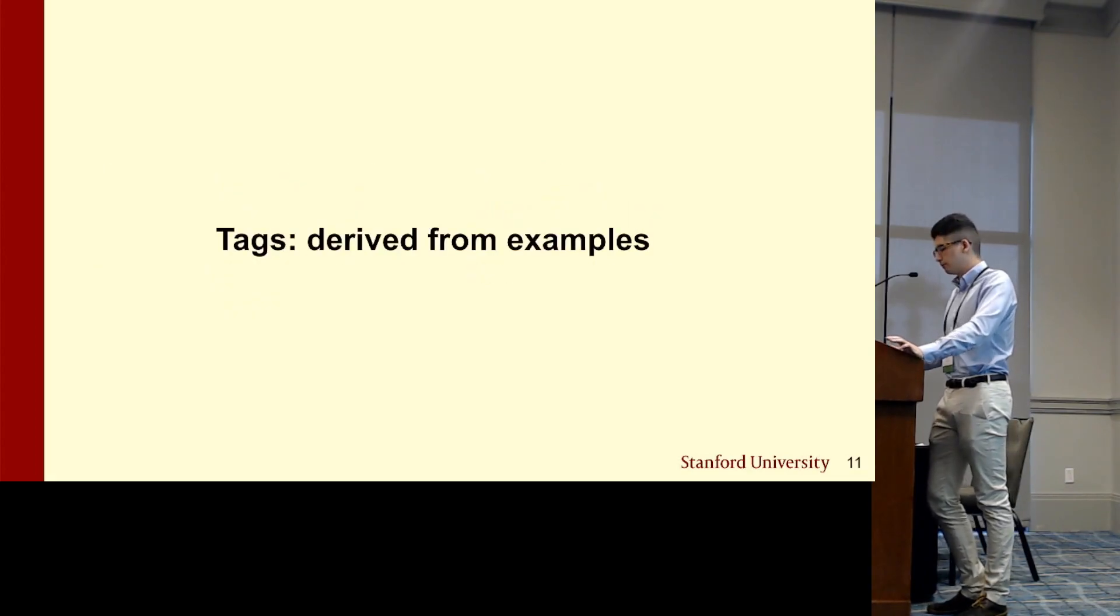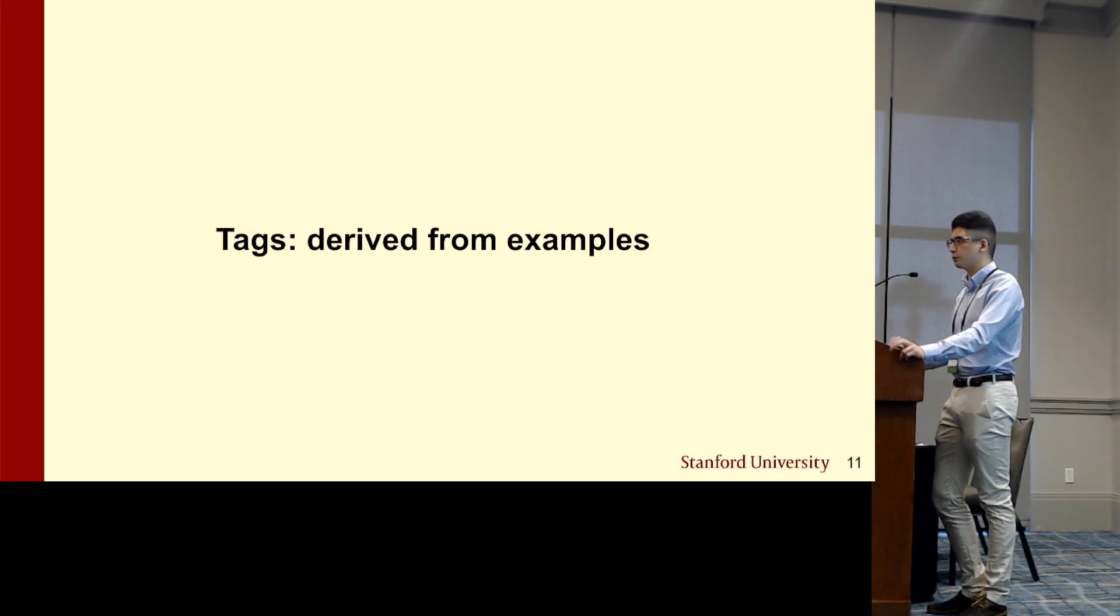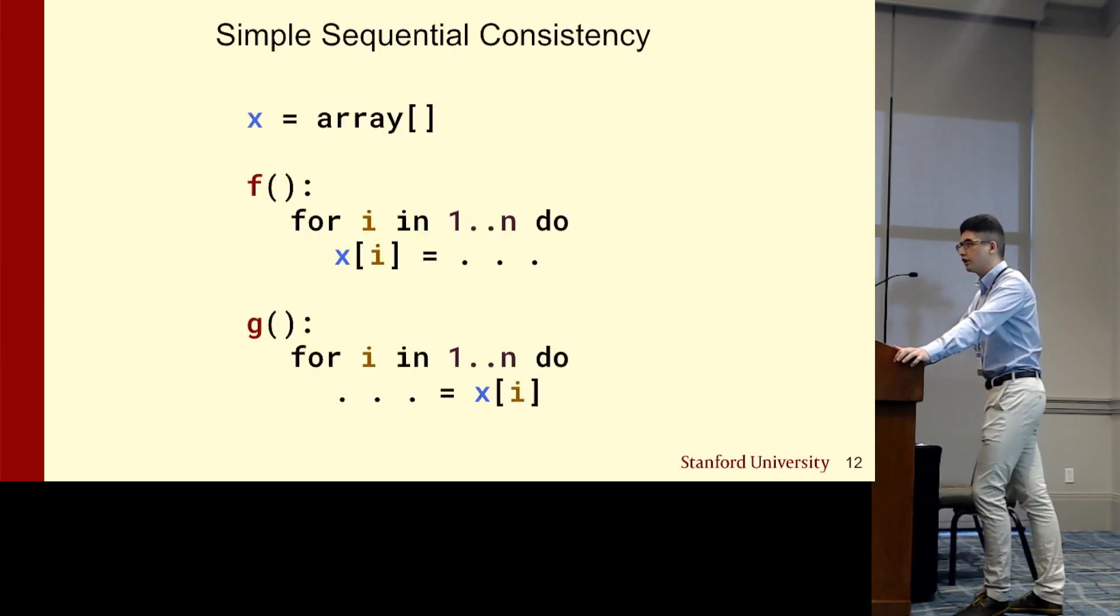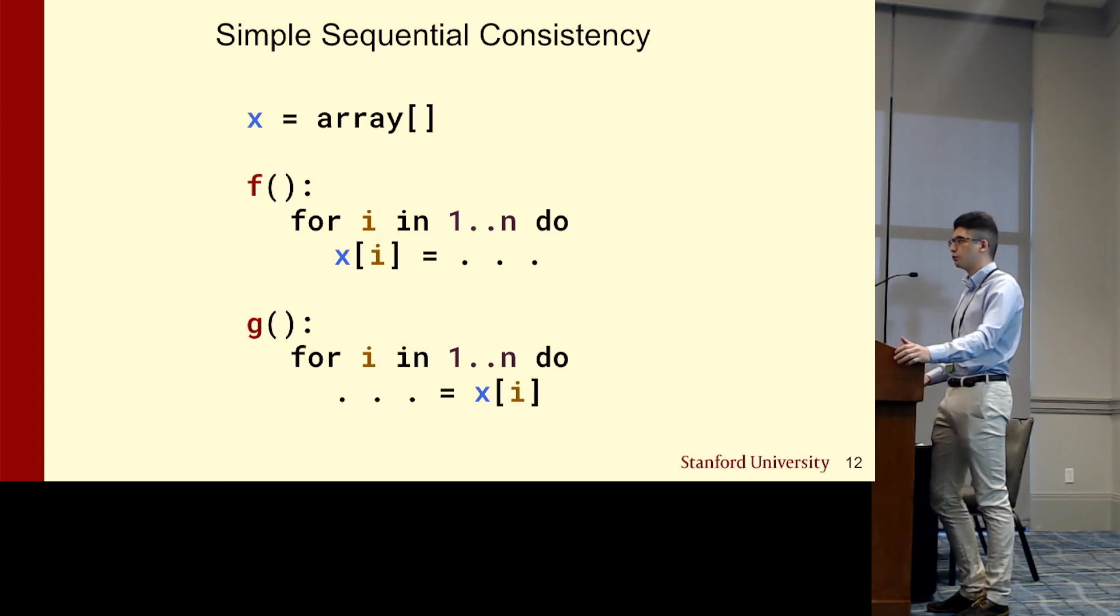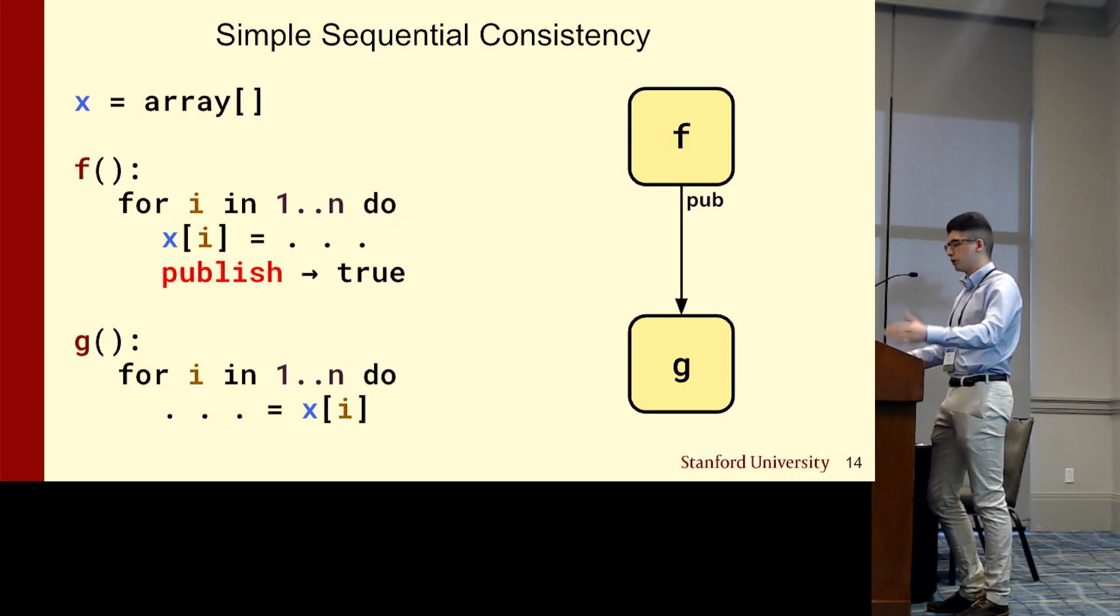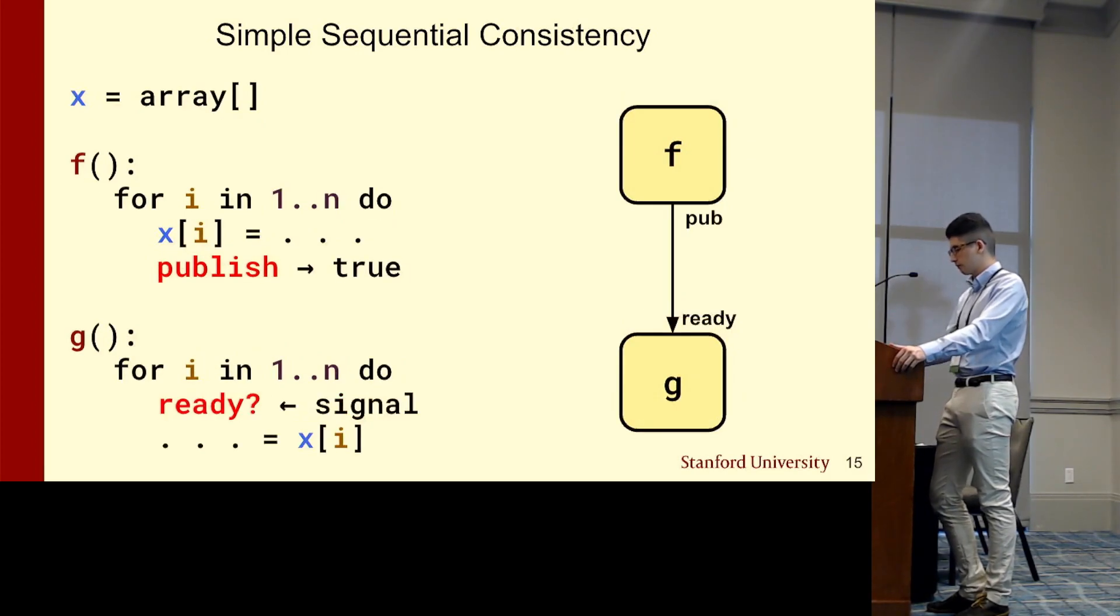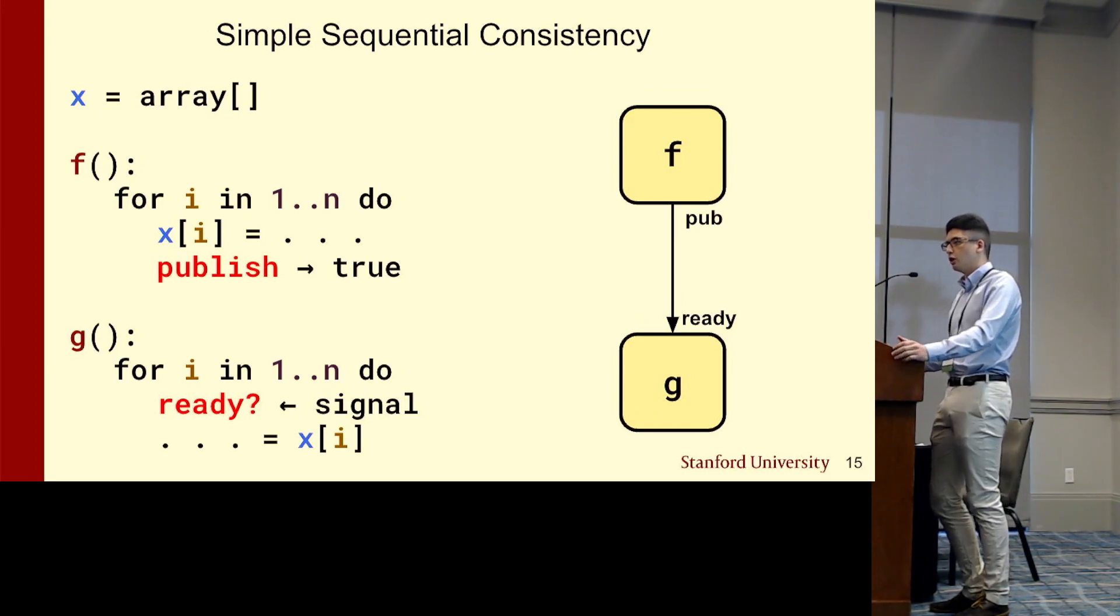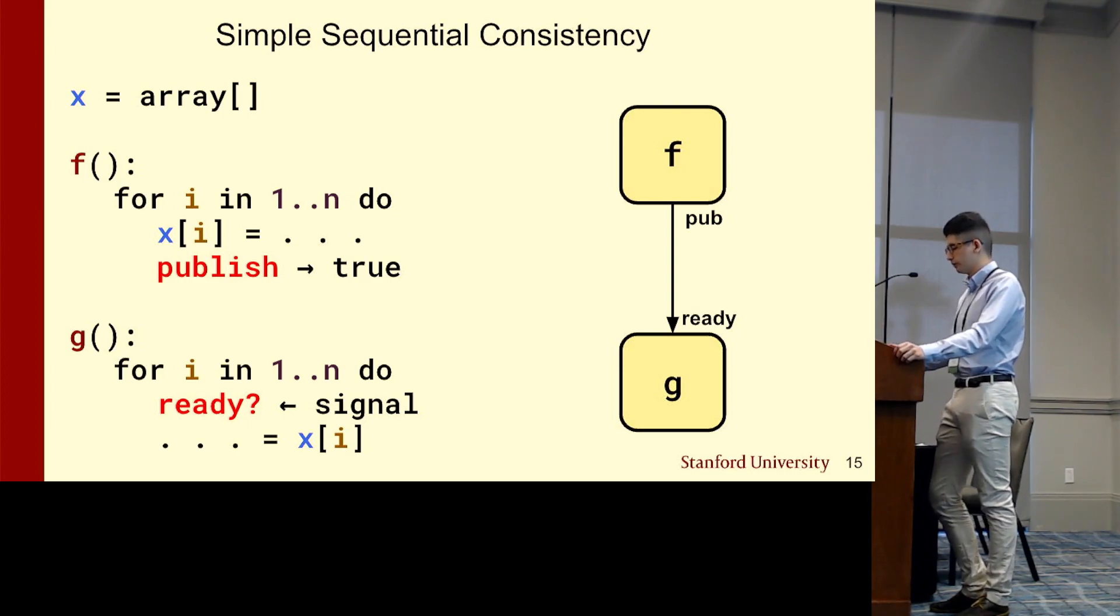Now we'll present one of the proposed solutions, which is TAGS, and I'll derive it from two rudimentary examples. First, consider this simple program between a producer F and a consumer G to array X. If the user wants sequential consistency, the compiler must insert an edge between F and G, given that they can be mapped to different compute units. To do this, F will publish a token whenever a write to X occurs. And that signal triggers G to evaluate a ready function, which dictates when the functionality associated with that node is ready to be run. So in essence, the user is tagging each memory operation with the desired synchronization scheme.